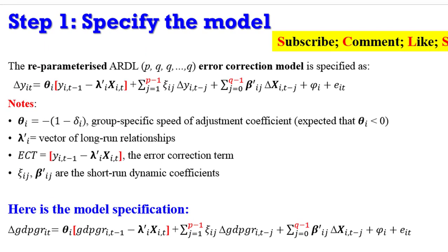Step one: specify the model. We are mostly interested in the re-parameterized ARDL PQQQ error correction model, and you can see the model specification here. GDP growth rate, which is a proxy for economic growth, is the dependent variable. Theta here is the adjustment coefficient. This is the error correction term in brackets. The number of lags to be used is P minus one lag for the dependent variable and Q minus one lags for the regressors. These are short-run parameters to be estimated. In case you don't know how to specify your model, you can always adopt what I have and modify it to suit your own analysis.